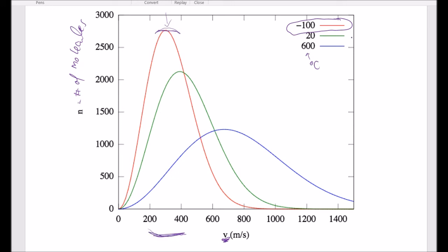As we raise the temperature, this is 20 degrees C. This is room temp. Then we see that the average molecular speed is now higher. It's in this range here.